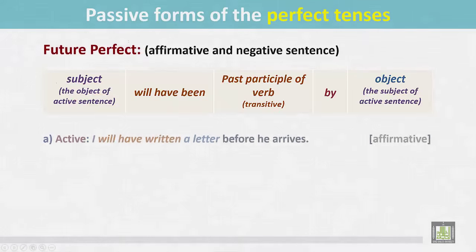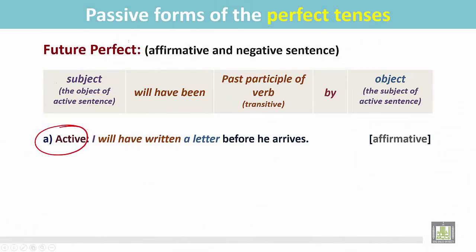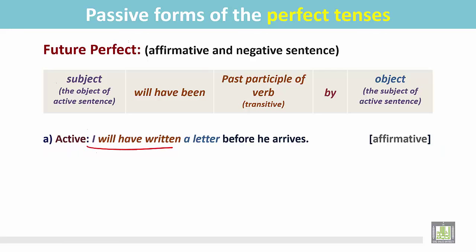Let's see the examples. This is an active sentence in the affirmative as a statement: 'I will have written a letter before he arrives.' I will have written — what? A letter. This is the answer to this question and it is the object of the verb 'written'.